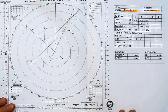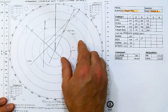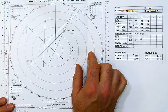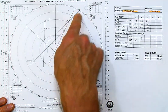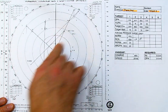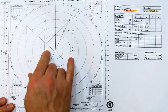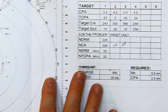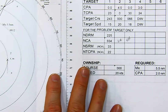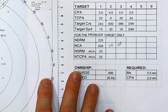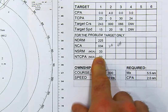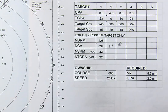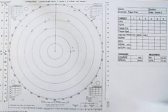In this video I'm going to show you how to solve the paper plot from week three of ENAV Lab. That's the first time we've done new course to avoid. I'm going to concentrate on target one and not solve for the other vessels — we did that last week. The key for all the vessels is available, but I'm only really going to be doing target one. Let's get started.